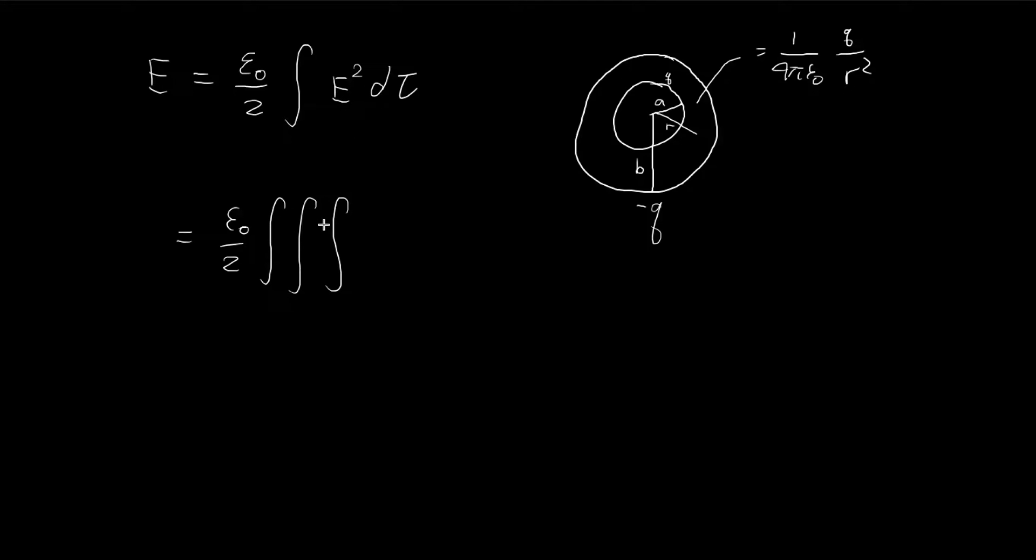It's going to be a triple integral because we're integrating across space, so it's 3D. So the electric field squared, it's just this expression squared, and then a unit of volume. We're obviously going to use spherical coordinates. So it's going to be r squared, sine theta, dr, d theta, d phi.